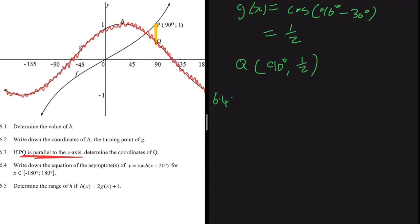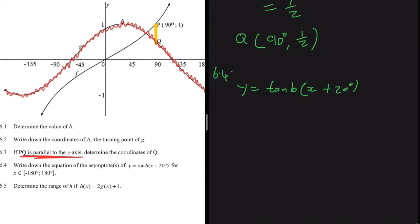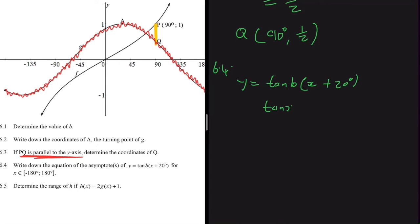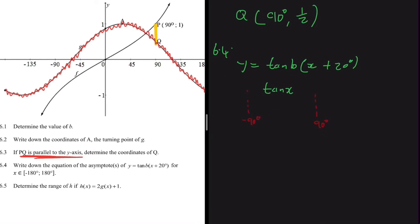Question 6.4 asks for the asymptotes of y = tan(bx + 20°) for x ∈ [-180°, 180°]. Starting from tan(x), the asymptotes are at 90° and -90°. We know b = 1/2, so we have tan(½x).